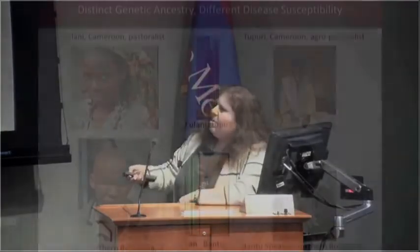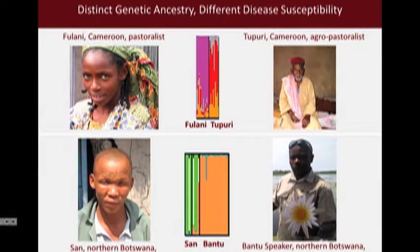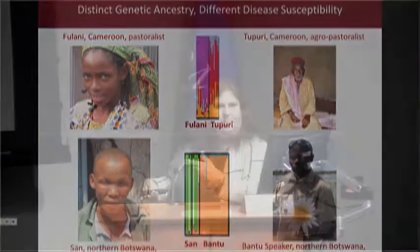In Southern Africa, the San, who until recently were traditional hunter-gatherers, now live near agriculturalists, yet they have an increased risk for TB.